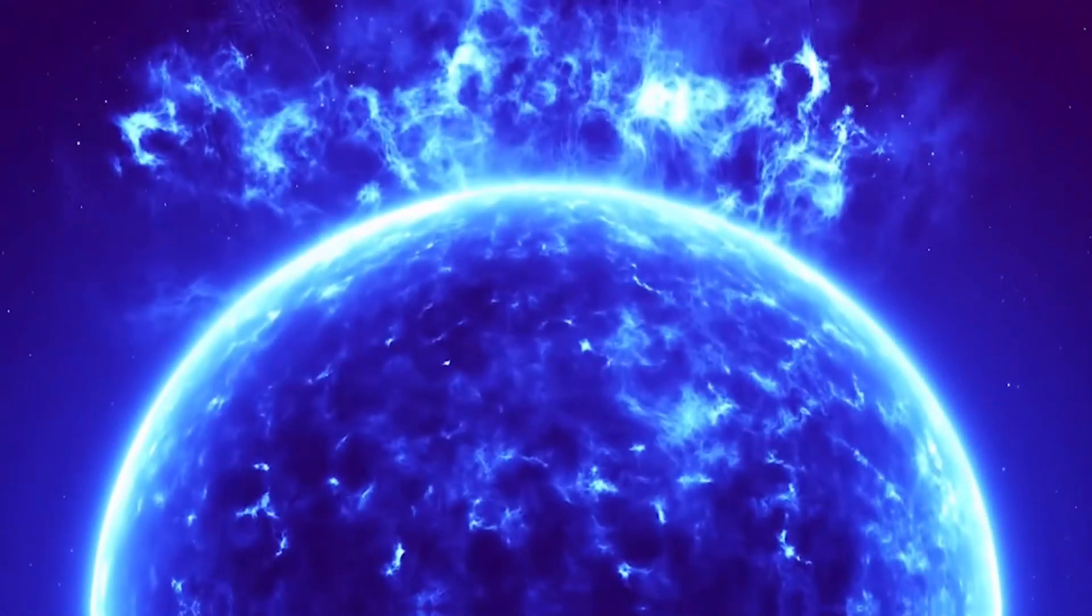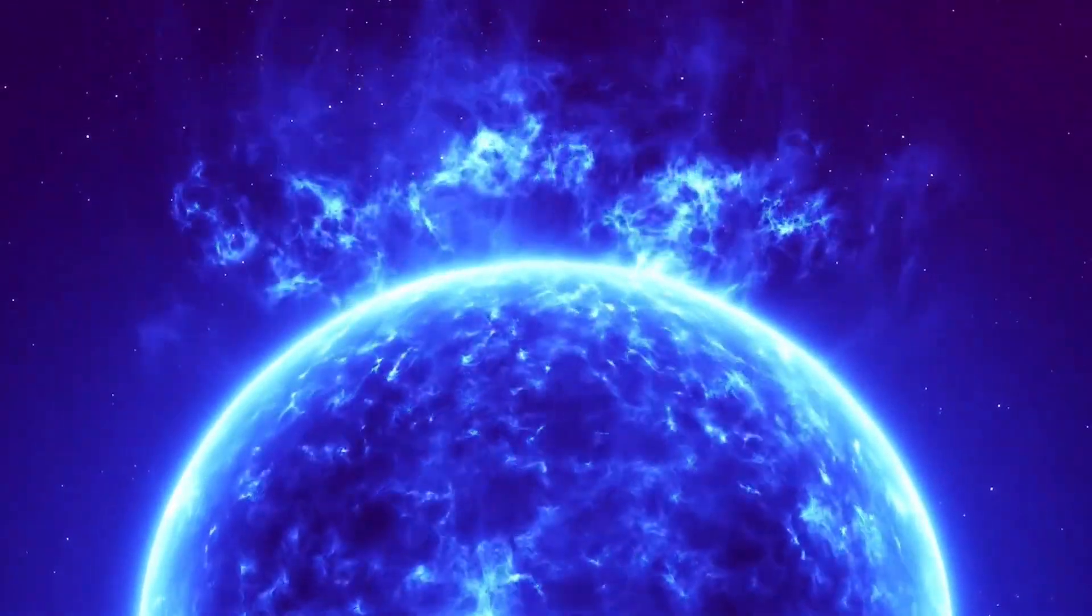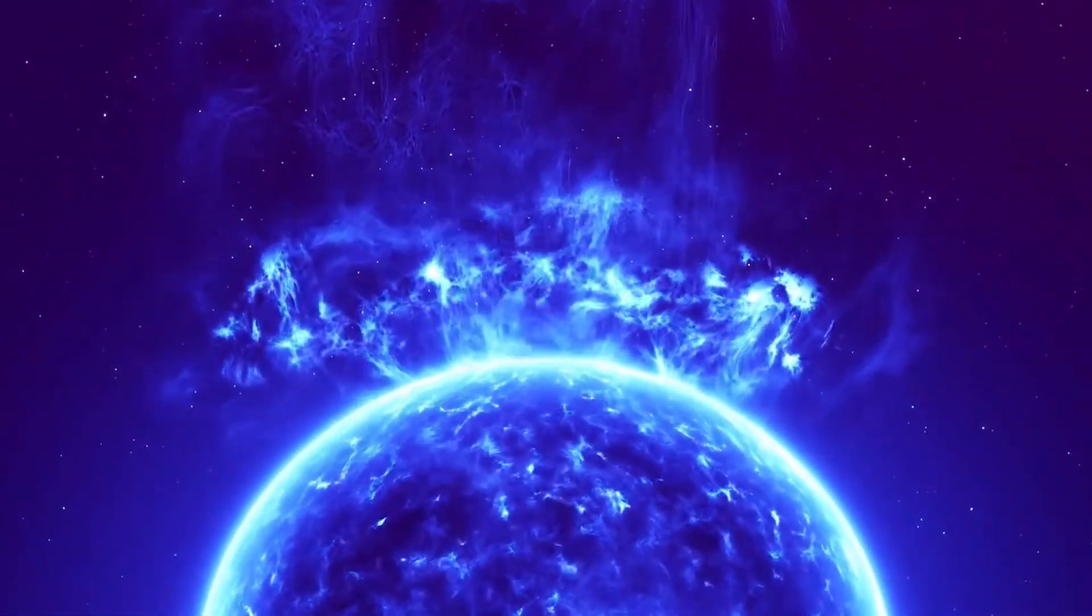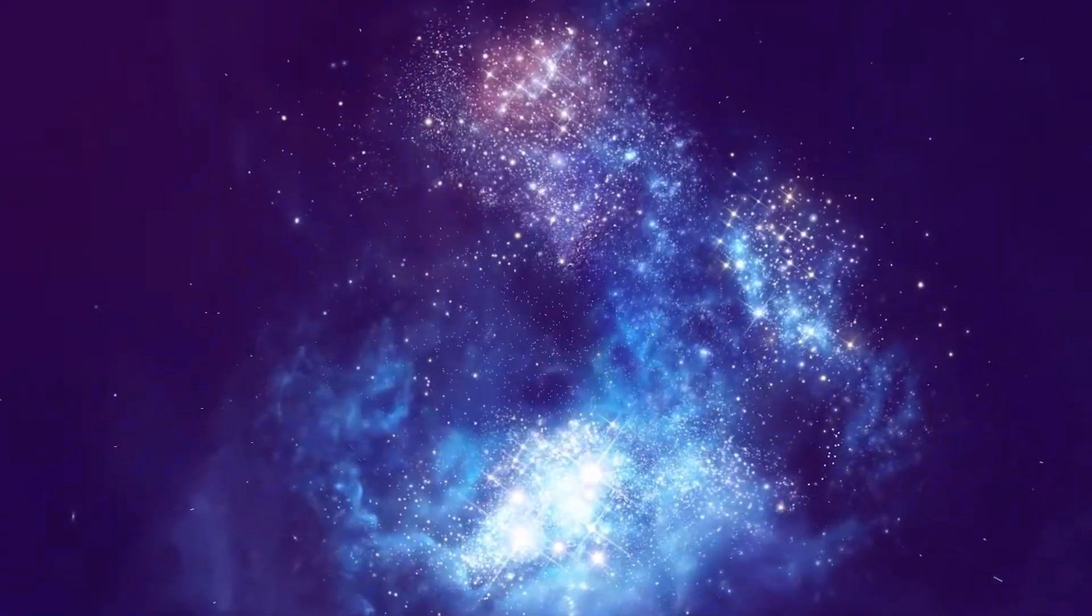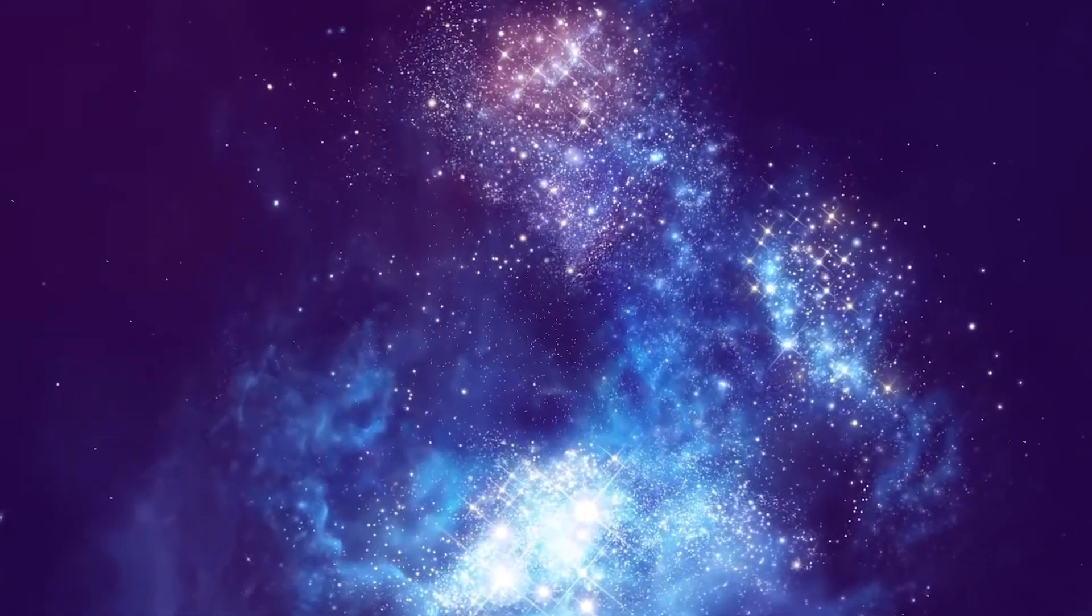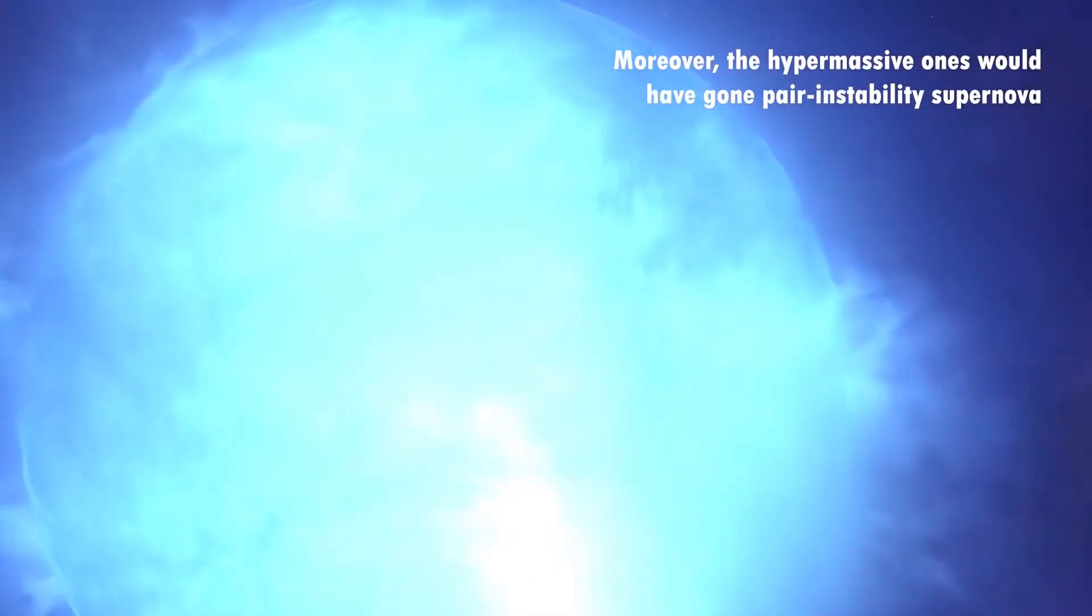they should be composed entirely of primordial gas, hydrogen, helium, and very small amounts of lithium and beryllium. The gas from which Pop 3 stars formed had not been recycled from previous generations of stars, but was pristine material left over from the Big Bang. The only problem that the Population 3 stars are entirely hypothetical at present.